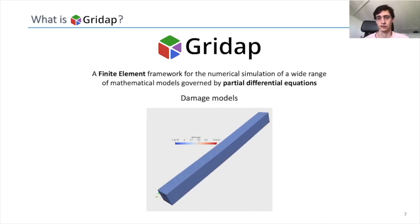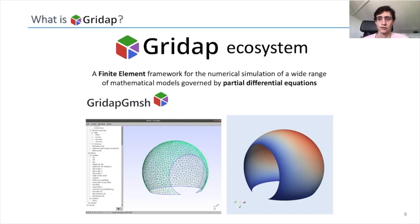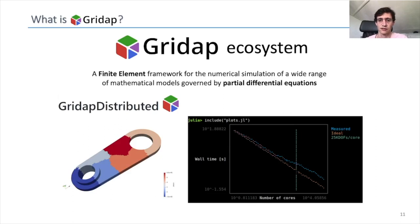We also have the option to solve problems like electromagnetic scattering, which involve complex PDEs. On top of that, Gridapp comes with a nice ecosystem with additional packages that introduce new features, like the Gridapp-Gmsh package that allows using meshes generated from Gmsh, Gridapp-Embedded that helps with complex geometries embedded in background grids, and the Gridapp-Distributed package that allows us to solve problems on distributed computers.